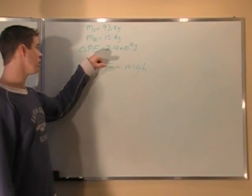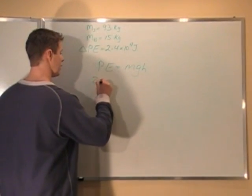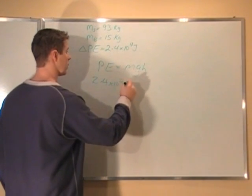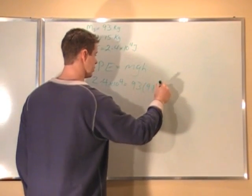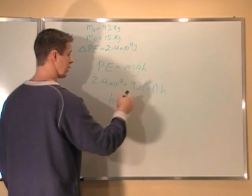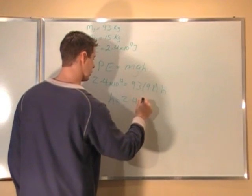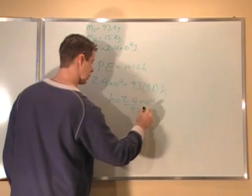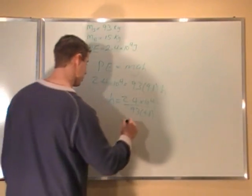We know that the student himself gains that much potential energy. We can use that in this equation: mass of 93, 9.8 is g, h. So we divide both sides by 93 times 9.8, throw that in our calculator. 2.4 times 10 to the 4 divided by 93 times 9.8 gives us a height of 26.33 meters.